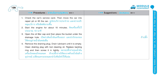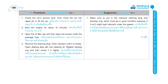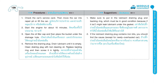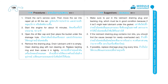Suggestions: 1. Make sure to put in the lubricant draining plug and backing ring, which must be in good condition, because if it isn't, it might leak lubricant under the gasket. 2. If the lubricant draining plug contains iron bits, you should find the cause, except for a newly overhauled car. 3. If possible, replace the draining plug ring every time.